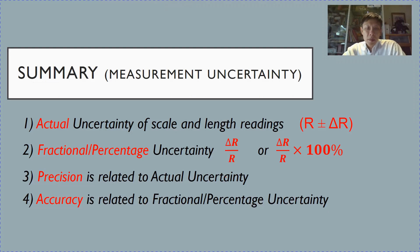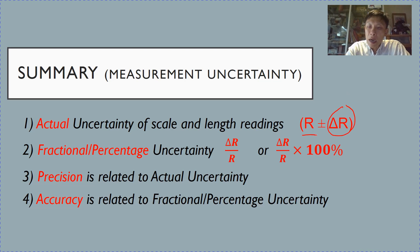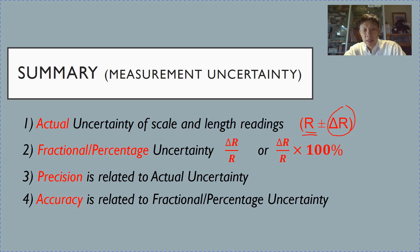To sum up this section on measurement uncertainty: we learned about actual uncertainty for scale and length readings, and express readings as r ± Δr following two rules — Δr must be 1 significant figure, and r must be in the same decimal place as Δr. We touched on fractional and percentage uncertainty, and related precision to actual uncertainty and accuracy to fractional uncertainty. In the next section we will cover systematic and random errors. Thank you.